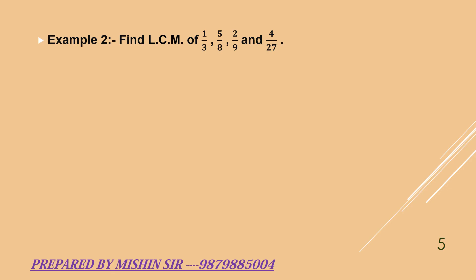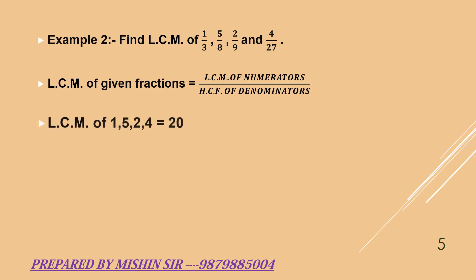Example 2, find LCM of 1 upon 3, 5 upon 8, 2 upon 9 and 4 upon 27. As we already have the formula to find LCM, LCM of given fraction is LCM of numerator of given fraction upon HCF of denominator of given fraction. We will find LCM of numerator and HCF of denominator separately.